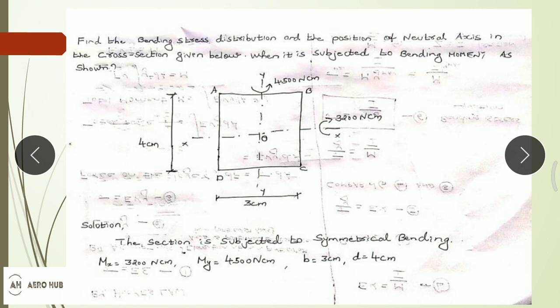Now we will solve a problem: find the bending stress distribution and position of the neutral axis in a cross-section when it is subjected to bending moments as shown. We have a rectangular section with bending moment along the x-axis Mx = 3200 N·cm and along the y-axis My = 4500 N·cm. The width is 3 cm and depth is 4 cm. Point O is the origin and we must find the bending stress at points A, B, C, and D.